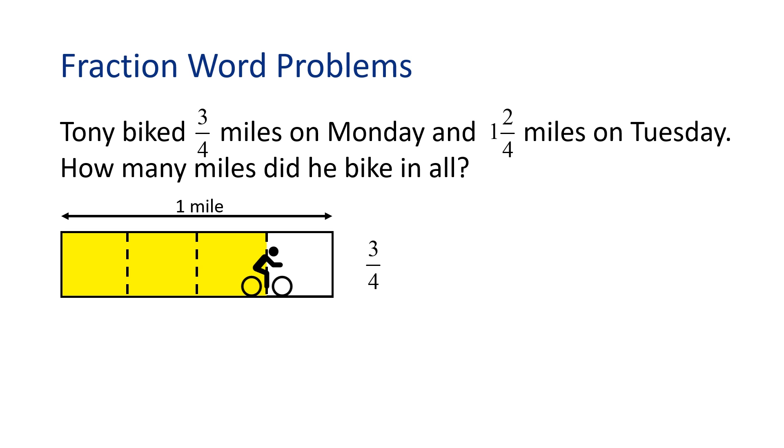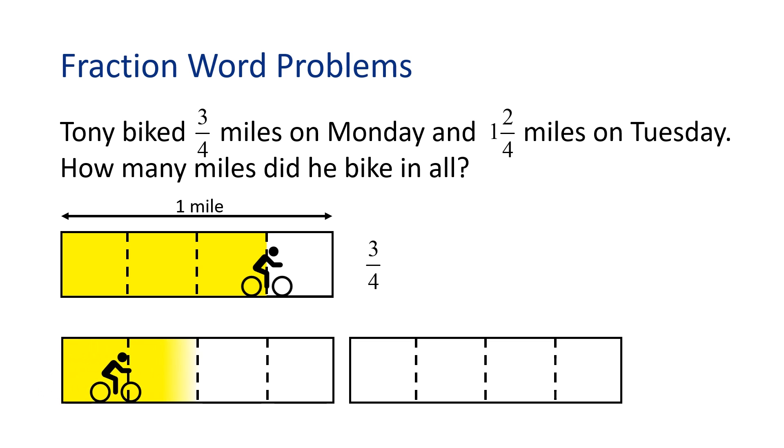On Tuesday, we know Tony biked one and two-fourths miles. To model this, we need two more rectangles, this time also partitioned into four equal parts each. Now we can shade one whole rectangle and two out of the four parts of the second rectangle, and this will model one and two-fourths.